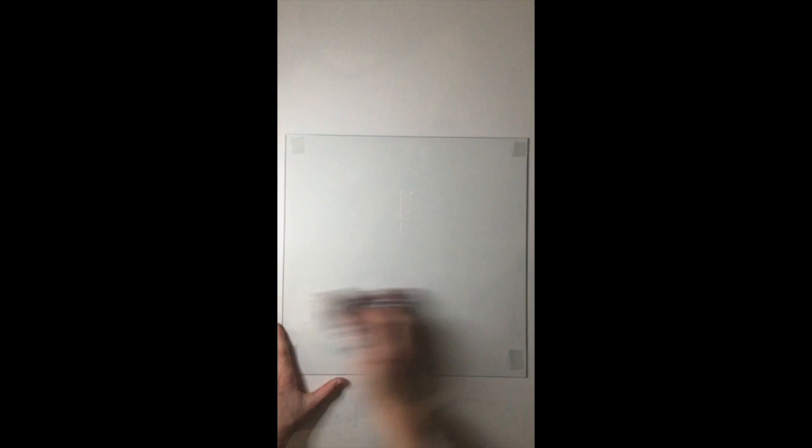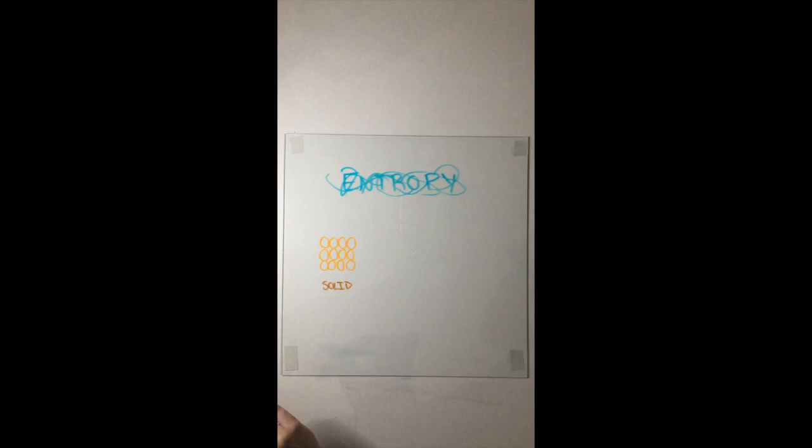The second law of thermodynamics can be defined by entropy, the measure of randomness. The increase of entropy, or disorder, is favored by nature, and it increases whenever there's a change. That's why solid objects have less entropy than liquid or gas, because those other two move around or change more often.